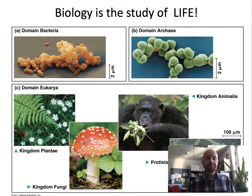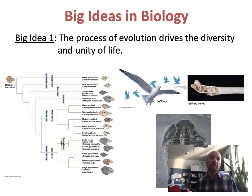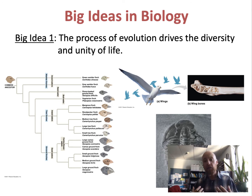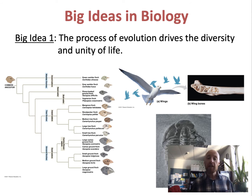What are the things in biology that tie it all together? The first big idea is evolution — it links every field, whether it's medicine, paleontology, epidemiology, or molecular biology. Evolution is the process of change. Individuals can't change their genetic makeup, but over time a population's genetic structure can change: some traits become more abundant and others less abundant.